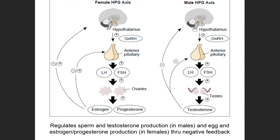Testosterone also feeds back negatively on the hypothalamus. As testosterone levels rise, negative feedback causes the hypothalamus to reduce GnRH production and the anterior pituitary to reduce LH and FSH output, giving less stimulation to the testes. Conversely, if testosterone levels drop, the negative feedback is removed, and the hypothalamus and anterior pituitary are free to increase GnRH, LH, and FSH to stimulate the testes to produce more testosterone and sperm.